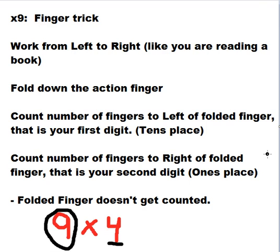Now to get your answer you're going to count how many fingers are on the left side of that folded finger. You should see that there are three fingers there: your pinky, your ring finger, and your middle finger are the three fingers that are to the left of your folded finger. So we're going to write down a three.